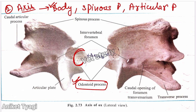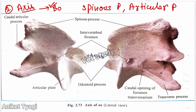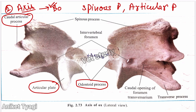The spinous process of the axis is inclined forward and increases in thickness as you go backward. The articular process is of two types: cranial and caudal. The cranial articular process is modified to form an articular plate around the base of the odontoid process in a flat form. The caudal articular process is well developed and directed backward.